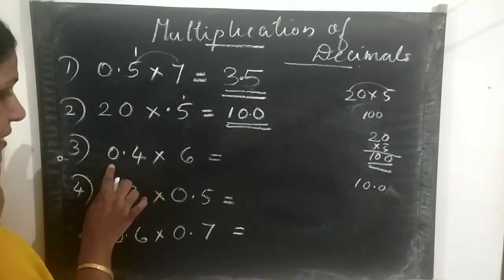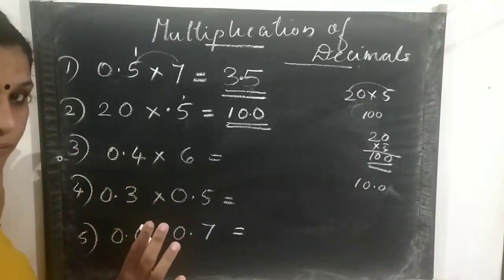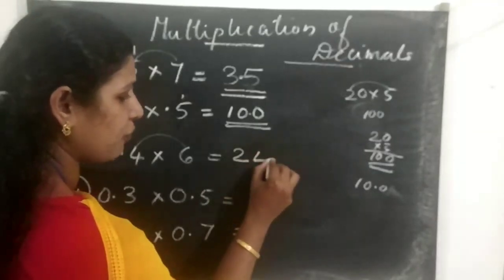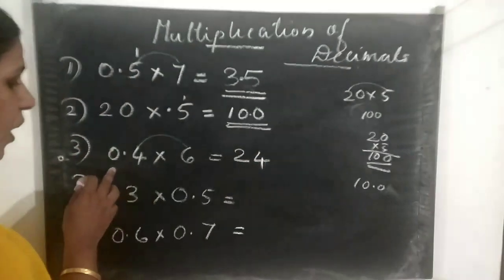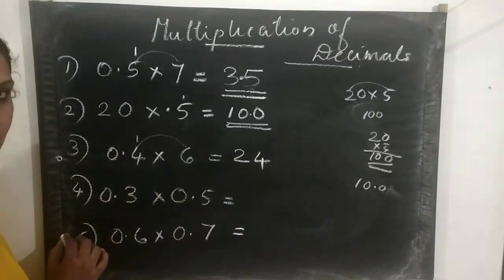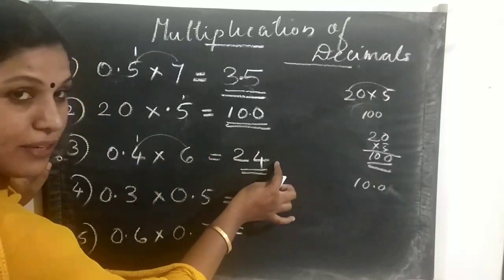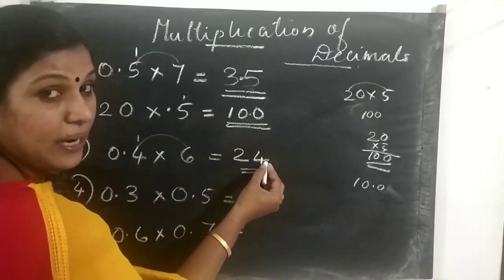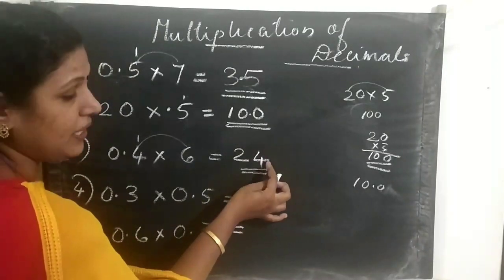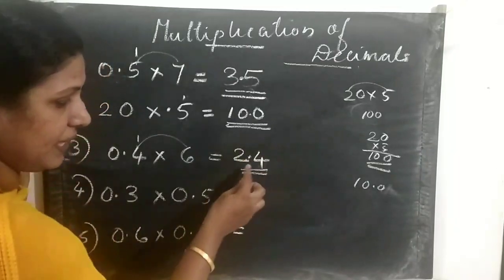The next is 0.4 into 6. First we multiply the numbers: 6 into 4 is 24, so we write 24. Then we count the place values — that is 0.4, which has 1 decimal place. We count from right to left, that is 1. After 1 place value we put a point in the middle. The answer is 2.4.